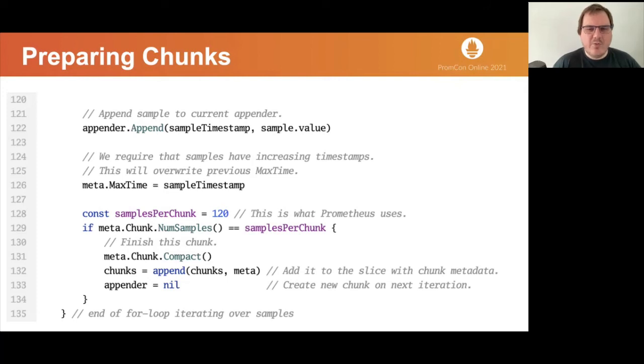That is how Prometheus expects to find samples in the chunk. After writing 120 samples into a chunk, we finish the chunk, append metadata to our list of metadata and set appender to nil, which will cause creation of new chunk in the next iteration. And that's it. This creates chunks.